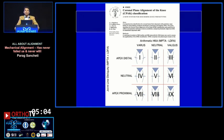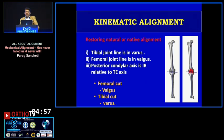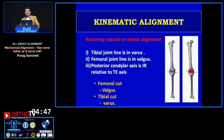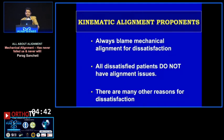Even though Methane tried to tell us how we can know what native anatomy was so many years ago, the kinematic guys say: reproduce the native alignment, cut the tibia slightly varus, the femur slightly valgus — and all those things. They do work, but I have my own reservations against them.